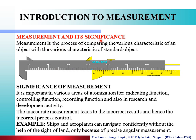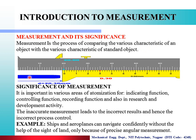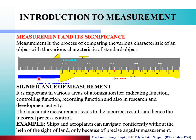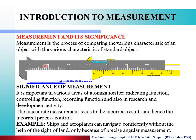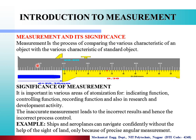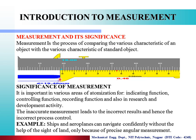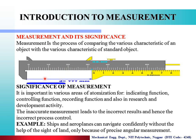Now we see measurement and its significance. Measurement is the process of comparing various characteristics of an object with the various characteristics of a standard object. Characteristics means the object's length, diameter, volume, and so on. We measure the length or diameter of an object and compare it with the standard — that process is called measurement.